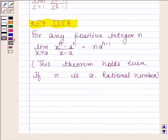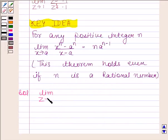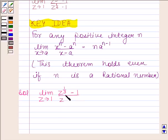Let us now begin with the solution. In this question, we have to evaluate limit z tends to 1 of z to the power 1 by 3 minus 1 upon z to the power 1 by 6 minus 1.